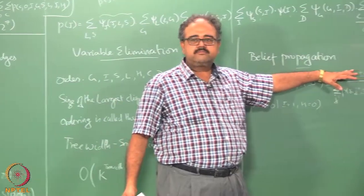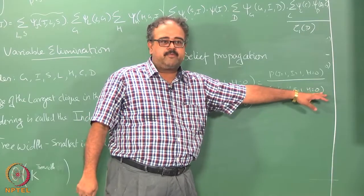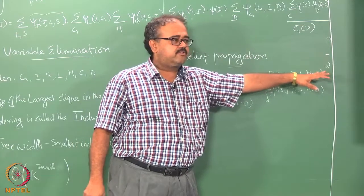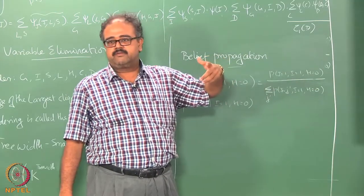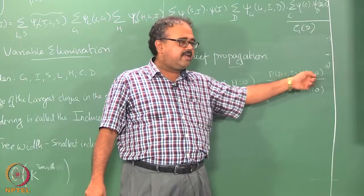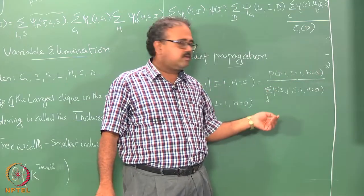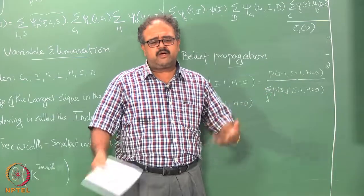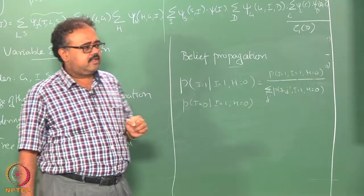This is essentially a ratio of two marginals. One marginal is the marginal probability of i=1, h=0, and the other is the marginal probability of j=1, i=1, h=0. If I eliminate all the other variables I will be left with one table that has j, i, and h as entries, and I can just read off the entry corresponding to j=1, i=1, h=0. Once I know how to compute marginals I can also answer questions about conditionals.